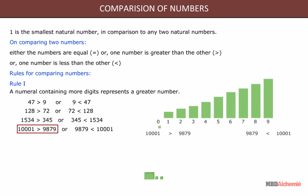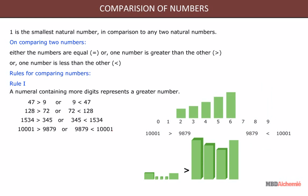10001 is greater than 9879, or 9879 is less than 10001.